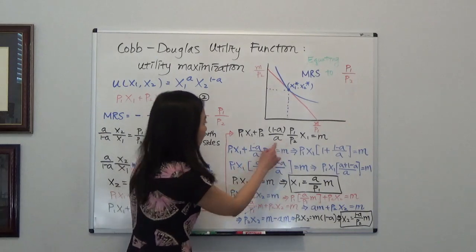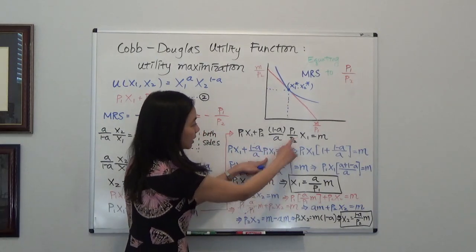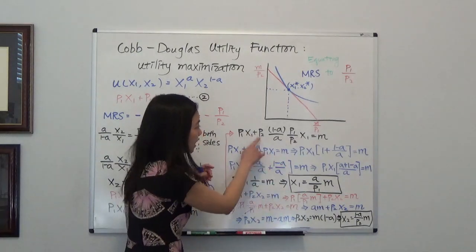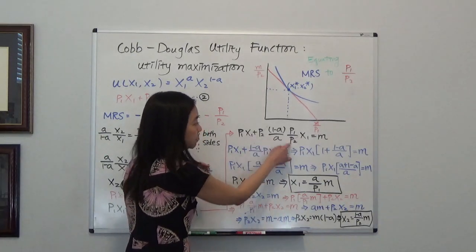And what I'm left with is p1x1 plus 1 minus a divided by a times p1x1. And that's equal to m. The only thing I did here was crossing out p2 and p2.